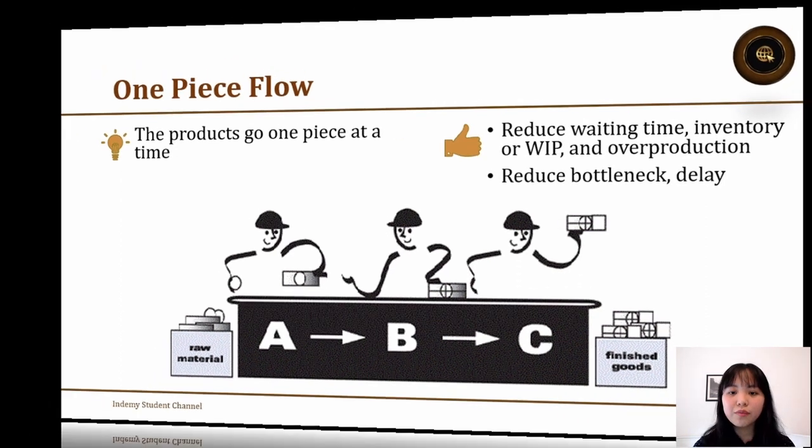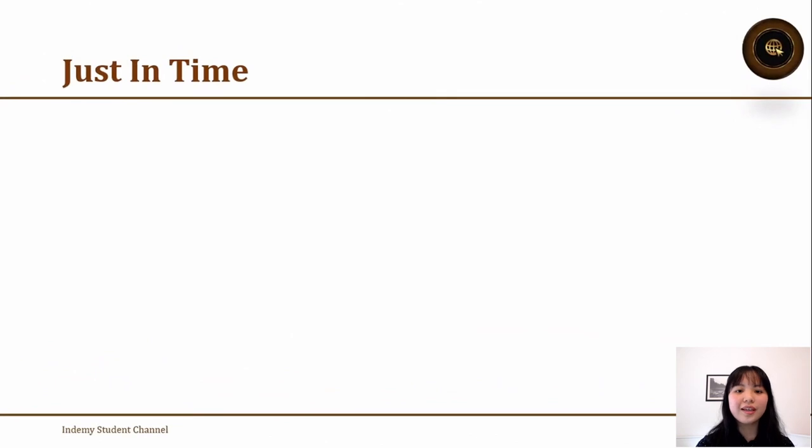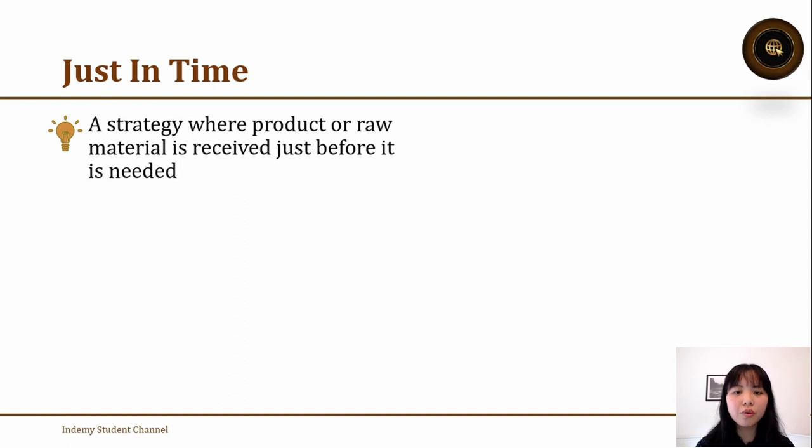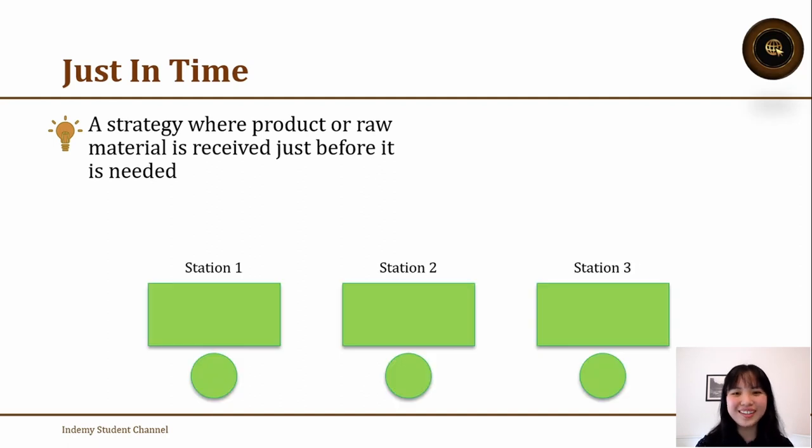The last tool that we will discuss today is called just in time. This just in time is actually more or less similar to one piece flow. Just in time is a strategy where the product or raw material is received just before it is needed.